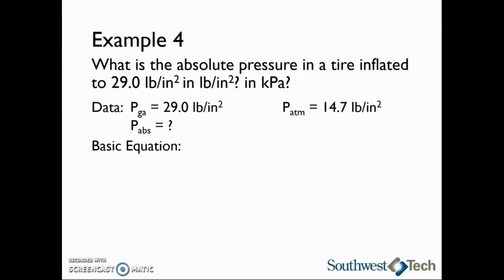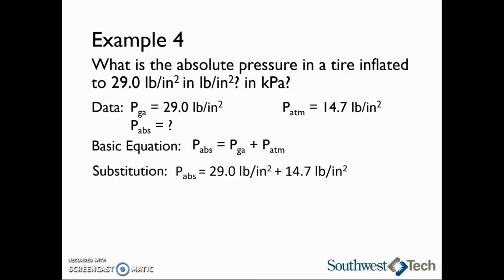The basic equation we will use is the one we just looked at, where absolute pressure is equal to the gauge pressure plus the atmospheric pressure. Substituting, we see that 29.0 pounds per square inch plus 14.7 pounds per square inch equals 43.7 pounds per square inch absolute. We can also find the absolute pressure in kilopascals by doing a unit conversion.